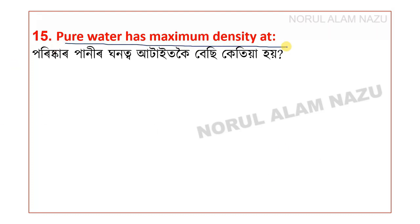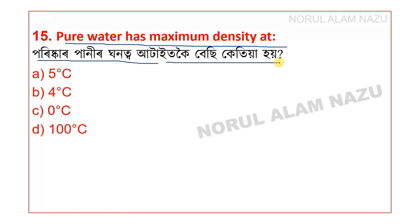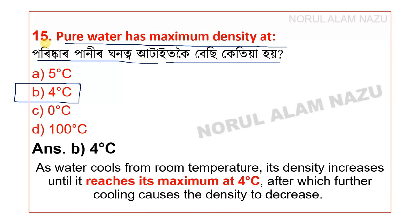Question number 15: Pure water has maximum density at which temperature? Options: 5°C, 4°C, 0°C, or 100°C. As water cools from room temperature, density increases until it reaches its maximum at 4 degrees Celsius. After this point, further cooling causes the density to decrease.